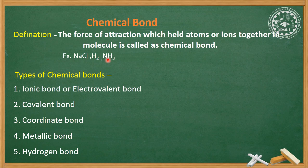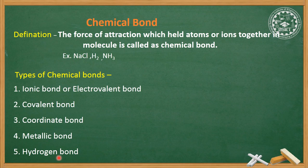Now there are different types of chemical bonds. The first one is the ionic bond or electrovalent bond. The second one is the covalent bond. The third one is the coordinate bond. The fourth one is the metallic bond, and the fifth one is the hydrogen bond.